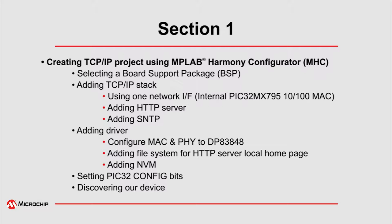First we will be selecting the board support package. In our demo we will be using the PIC32MX Ethernet Starter Kit. We will be adding the TCP/IP stack using one network interface. The PIC32MX795 has an internal 10/100 MAC. We will be adding the HTTP server which will serve the local web page. We will add Simple Network Time Protocol to allow the SSL library to validate the issue date and expiration date of the certificate provided during the SSL connection. We will be adding drivers to configure the MAC and the PHY attached to the PIC32MX. We will be adding the file system for the HTTP server to retrieve the local web page, and we will be adding NVM or non-volatile memory to store that local web page onto the onboard flash of the PIC32. We will then be setting the PIC32 config bits with the various fuses for the operating mode of the device, and we will be using a utility to discover our device once connected to our local area network.